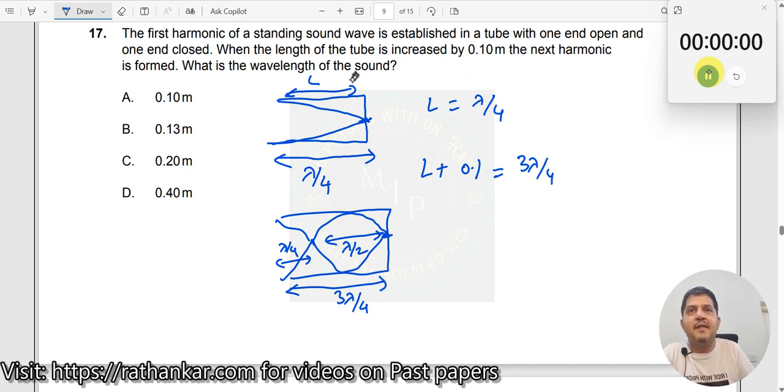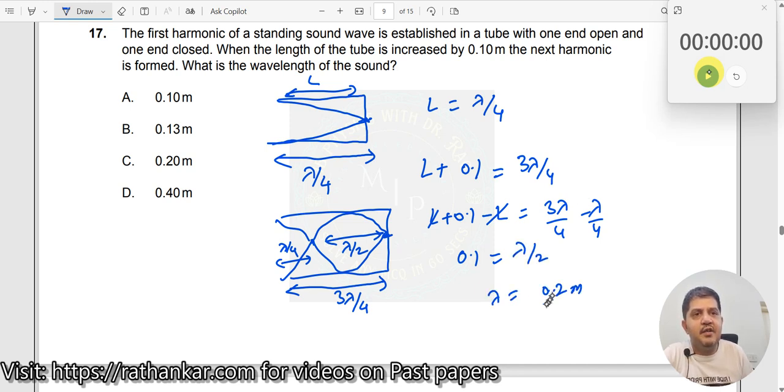What is the wavelength of the sound? Simple. Just subtract one from the other. So L plus 0.1 minus L will be equal to 3 lambda by 4 minus lambda by 4. This L and this L go away. You get 0.1 equals lambda by 2. Lambda should be equal to 0.2 meters.